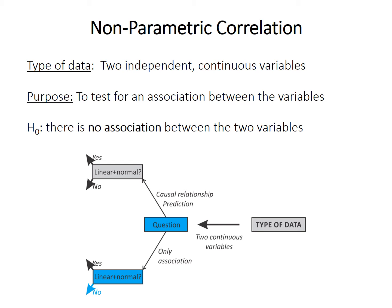Like Pearson's correlation, nonparametric methods require two independent continuous variables, and the goal is to test for an association between them, with the null hypothesis that there's no relationship. Unlike Pearson's correlation, however, there's no assumption of normality in these tests and no requirement that the relationship be linear.